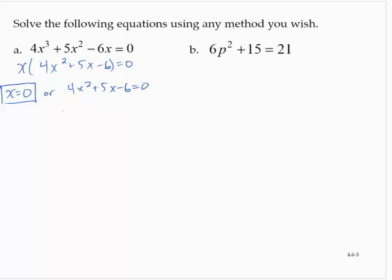Applying the quadratic formula, we would have x = (-5 ± √(5² - 4(4)(-6))) / 2(4).